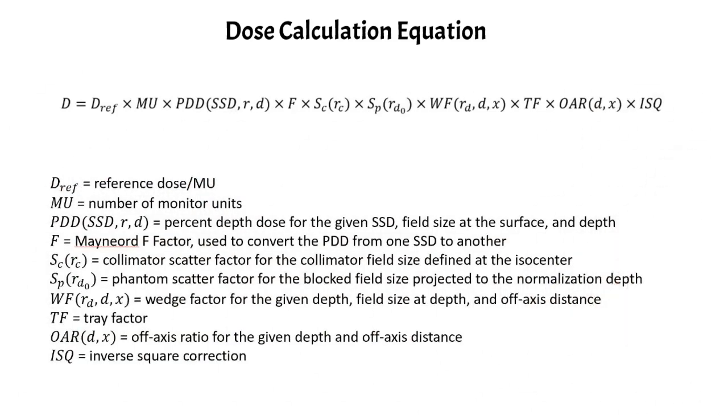So here's what all of the different terms mean. We have DREF, which is your reference dose per monitor unit, which is established during your TG51 calibration. MU is just your number of monitor units. PDD, which is a function of SSD, r, and d, is the percent depth dose for the given SSD for the field size at the surface and whatever depth you're calculating at.